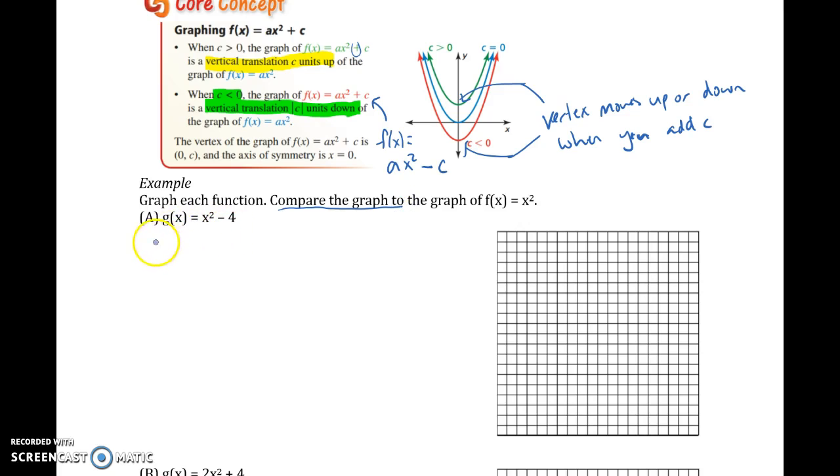So this minus 4, what happens is g(x) is a vertical translation down four units because it's a minus 4, so that tells us we're going down. That means in our minds we want to think the vertex goes from (0, 0) now to (0, -4).